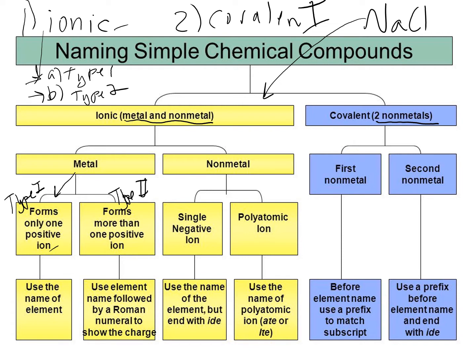Type 1 doesn't necessarily mean it forms a plus 1 charge — it could also form a plus 2. It means the charge is always going to be the same. Column 1 always forms a plus 1, column 2 always forms a plus 2, so elements in those columns never form any other type of charge — those are type 1. Type 2 are your transition metals, and transition metals can form multiple charges.